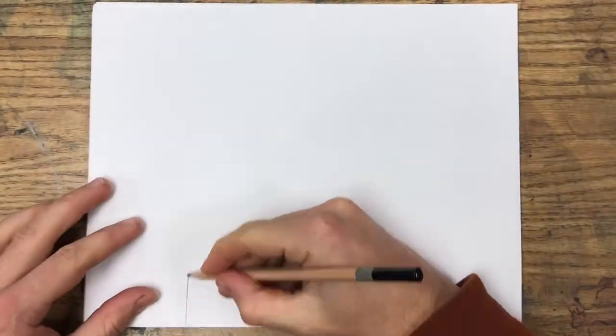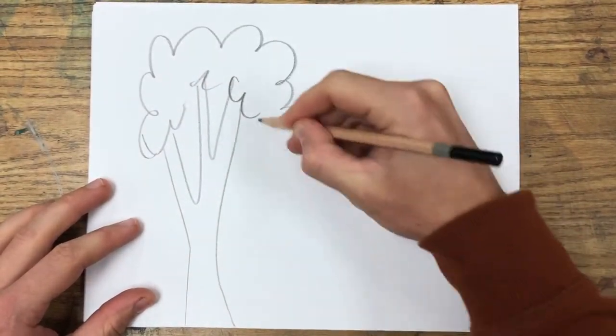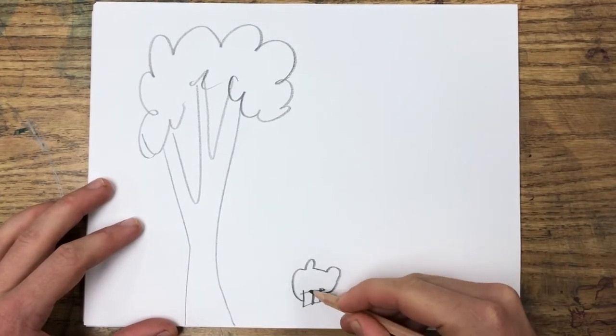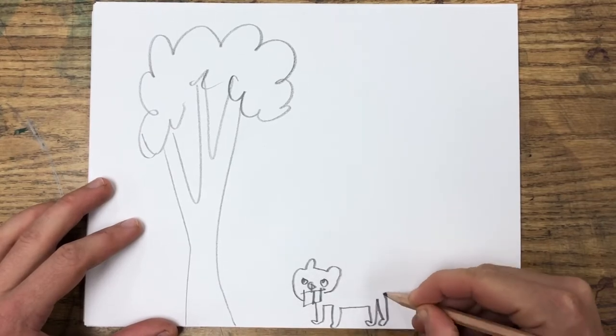When you first start drawing horizon lines, you might not draw them at all. Beginning drawers sometimes anchor their subjects to the bottom of the page and use that bottom edge of the page to represent the ground. This is a big no-no.